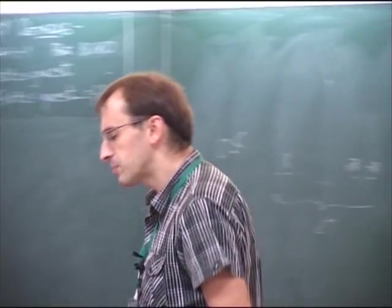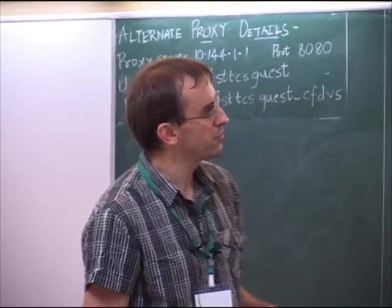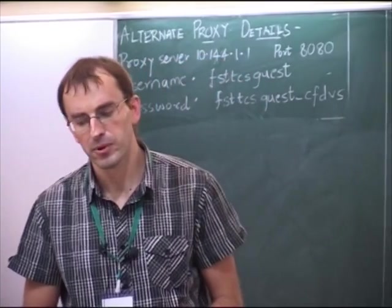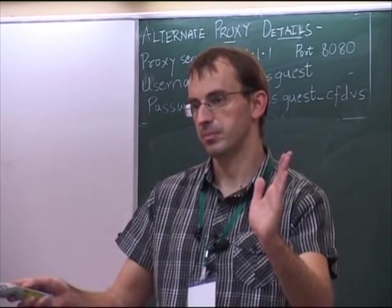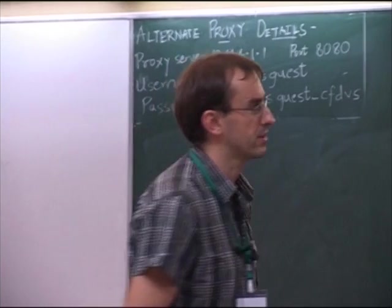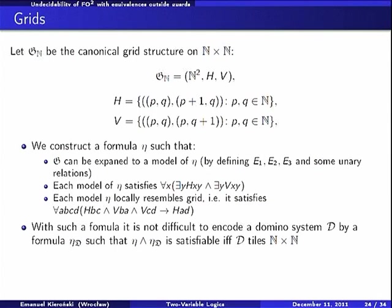So, the main problem is to write a formula which will encode grids, simply grids of n times n. Then having two variables is easy to encode these constraints. So the problem is to construct grids.